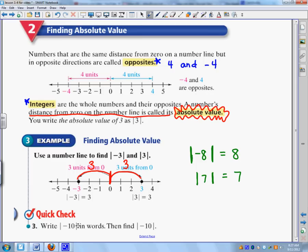So try this quick check. And then we'll come back and check it. So it says, write the absolute value of negative 10 in words. Then find the absolute value of negative 10. So what they want you to write is the absolute value of negative 10 in words. So how far is negative 10 from 0 on a number line? That's really all they want. So then what's the absolute value of negative 10? Well, the absolute value of negative 10 is 10. It's 10 steps away.